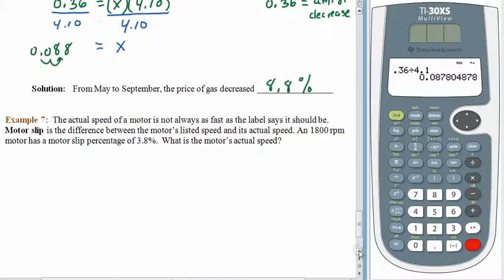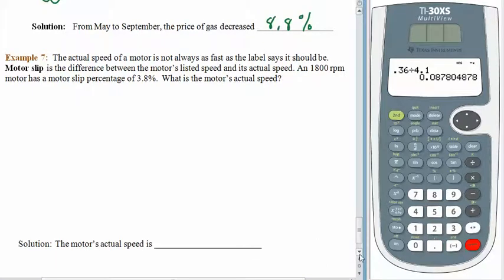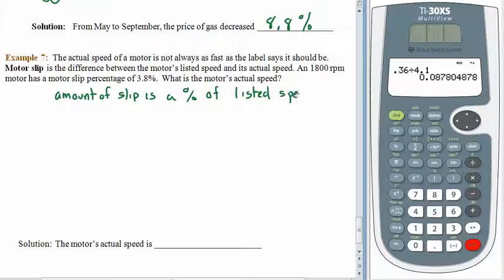As we come down here, we have one more example talking about motor slip. Motor slip is the difference between the motor's listed speed and its actual speed. And of course you know difference means that we need to do subtracting. The motor says it's supposed to be operating at 1800 RPMs, but it doesn't really. It has a motor slip percentage of 3.8%. Your job is to find the motor's actual speed. So what we're going to do here is talk about the word equation. Because this amount of slip, the amount of decrease, is a percentage of the listed speed. And that little sentence should be enough to get you where you need to go. Pause the recording, try this one all on your own from here, and come back when you are done.